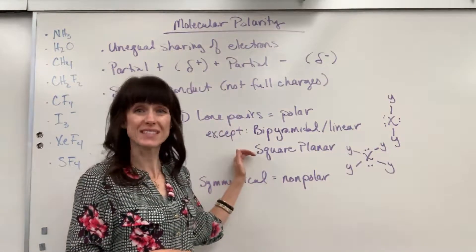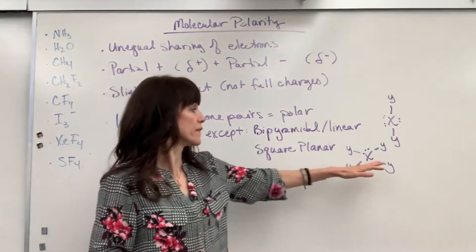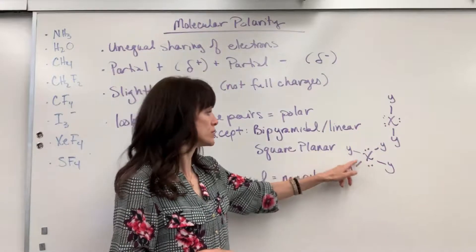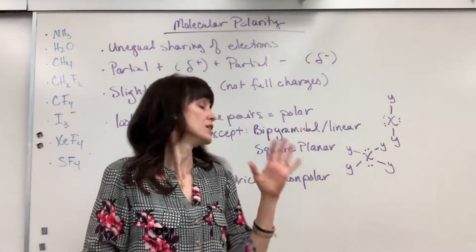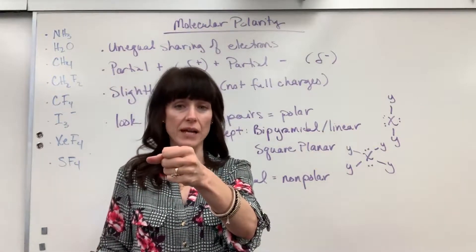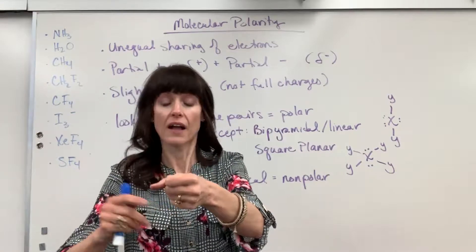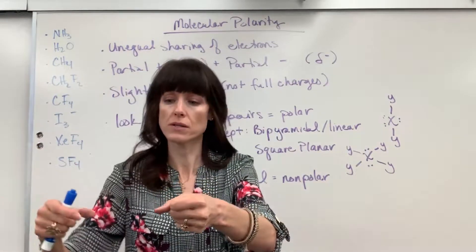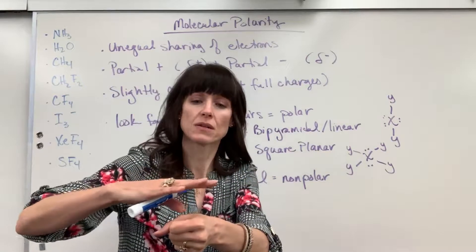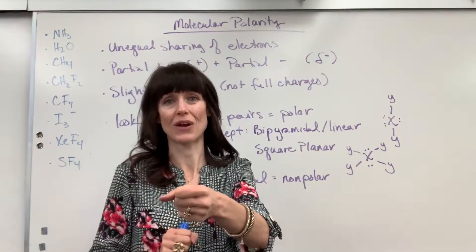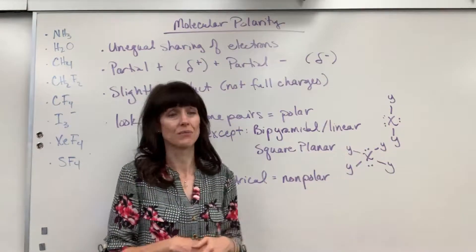The second exception is when we have six electron domains — octahedral electron geometry — square planar molecular geometry. Count electron domains: one, two, three, four, five, six — four bonds and two lone pairs. Picture the central atom X with a lone pair on the top and a lone pair on the bottom, and then in a square pattern, four Y atoms. That lone pair on top and lone pair on bottom cancel each other out. So even though there are lone pairs, this is going to be a non-polar molecule.